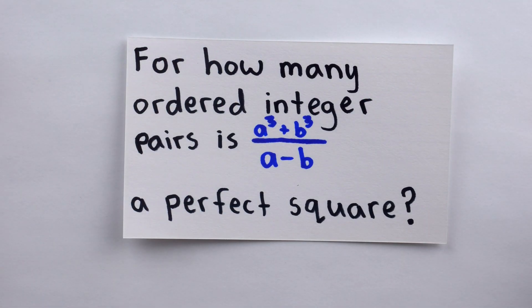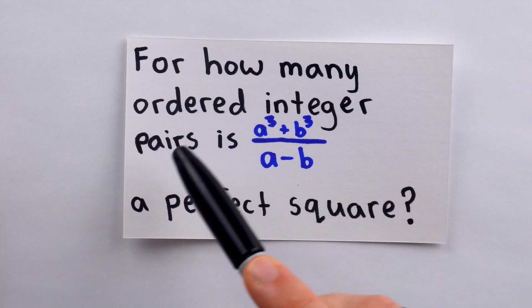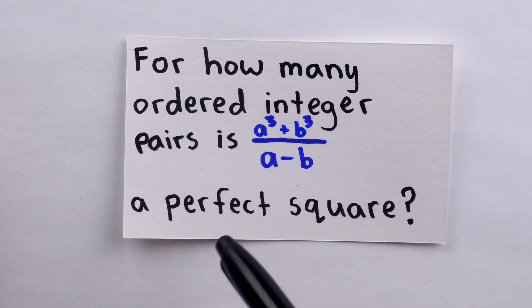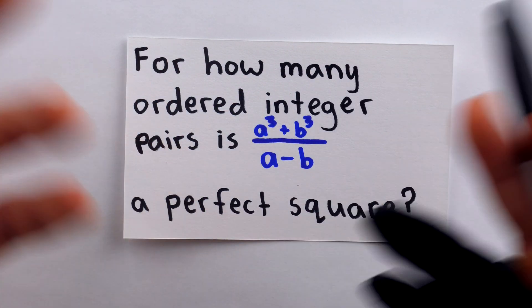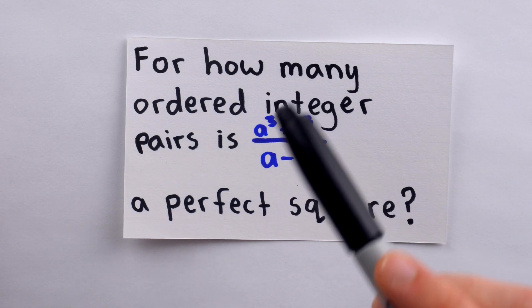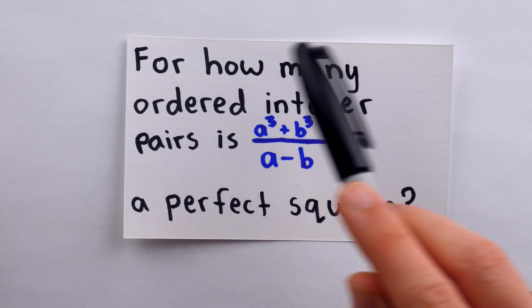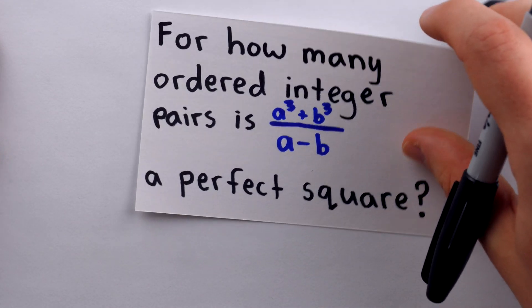So there are a few possibilities here. Either we need to prove that there are no ordered integer pairs that make this expression a perfect square, thus showing that there are zero solutions, or we need to find every solution and count them, or we need to show that there are infinitely many solutions to this situation. It's always a good idea to start off by trying some simple examples.